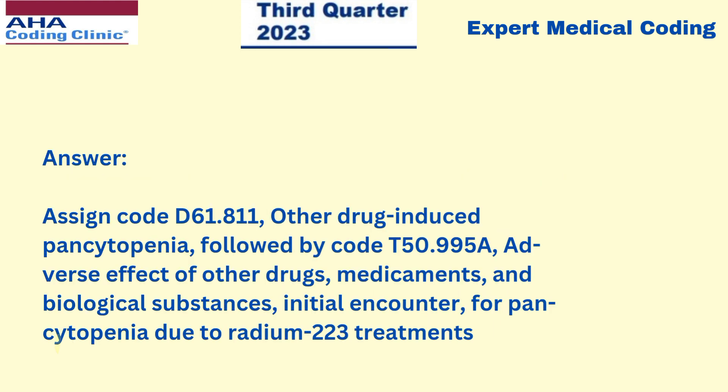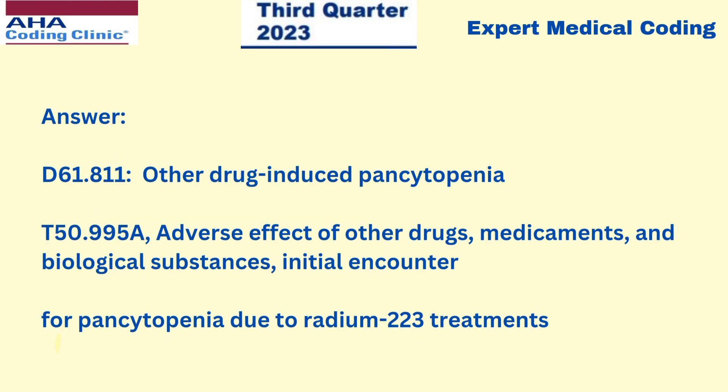What are the appropriate code assignments for pancytopenia due to radium-223 treatment? The answer is we have to assign two codes. The first code is D61811 - other drug-induced pancytopenia - followed by the code for adverse effect of radium-223, which is T50995A: adverse effects of other drugs, medicaments and biological substances, initial encounter.